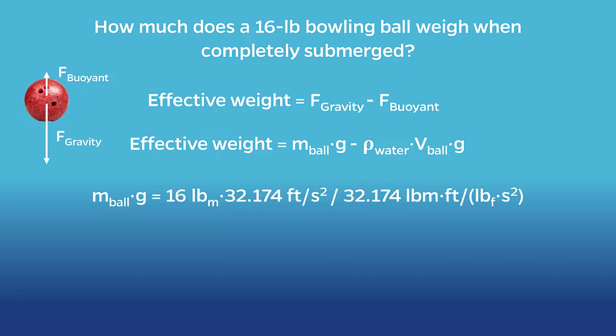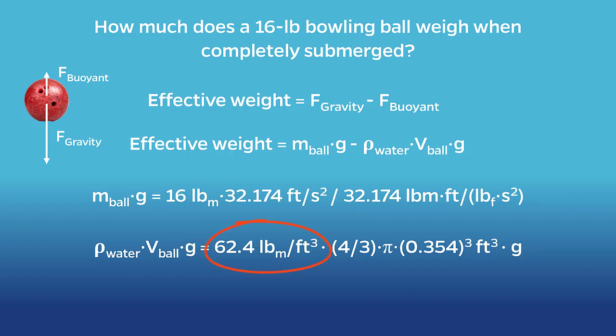Remember in this unit system the goofiness between pound force and pound mass. So when I multiply by g, I have to divide by the conversion factor of pound mass feet per second squared to pound force. Effectively, this means that the force of gravity on the ball is simply 16 pound force. Next, the density of water is 62.4 pounds per cubic foot.